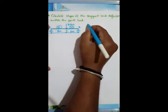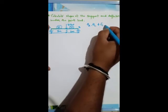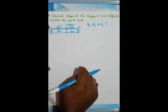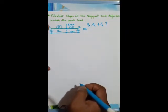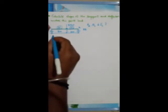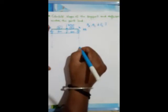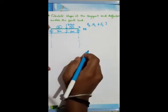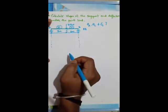So here we need to calculate theta A, theta C, and delta C. The given problem is the real beam — the original beam. Now we need to first draw the bending moment diagram for this. So first we need to draw the M/EI diagram for this simply supported beam.